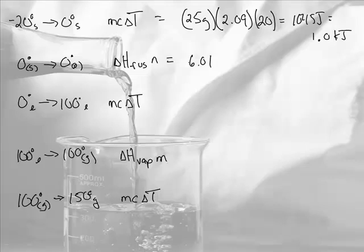This is delta H fusion, which was 6.01 times the moles. We did the moles in the last problem. 25 divided by 18, it was 1.39. This will give us a kilojoule answer, so it's 8.4. It should have been the same as last time, which it is. 8.4 kilojoules.